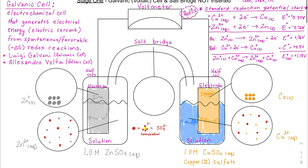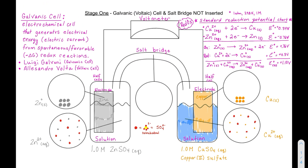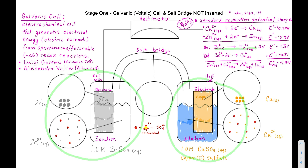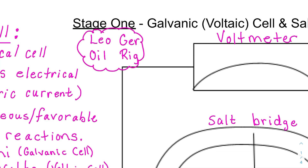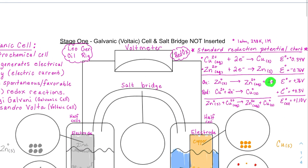The zinc is the one that will donate the electrons. To remember which is which: LEO GER — lose electrons, oxidized; gain electrons, reduced. Or use OIL RIG: oxidized is losing, reduction is gaining. When electrons appear as products in a half reaction, it's oxidation; when electrons are reactants being gained, it's a reduction.